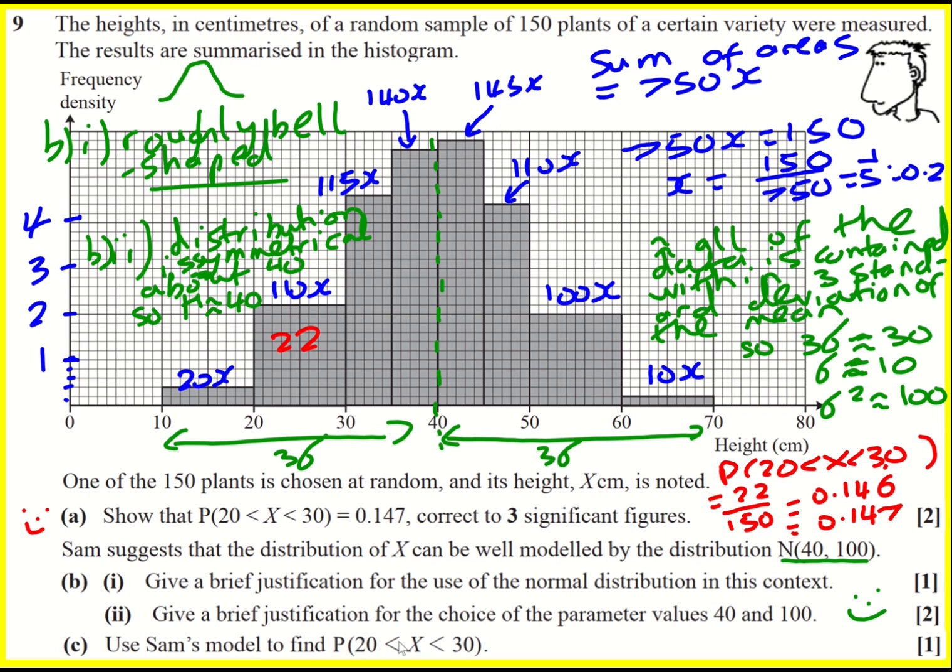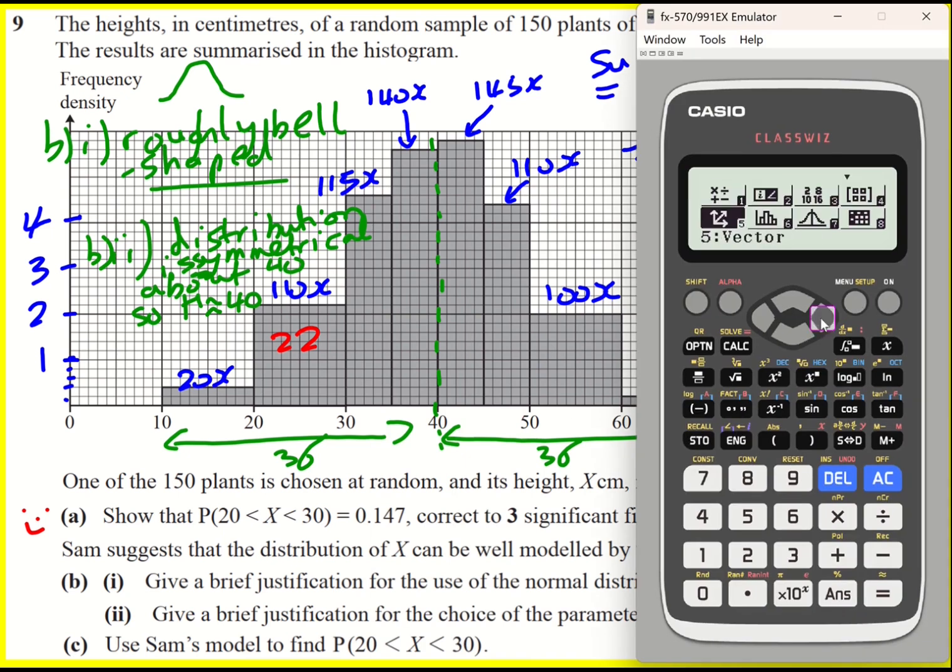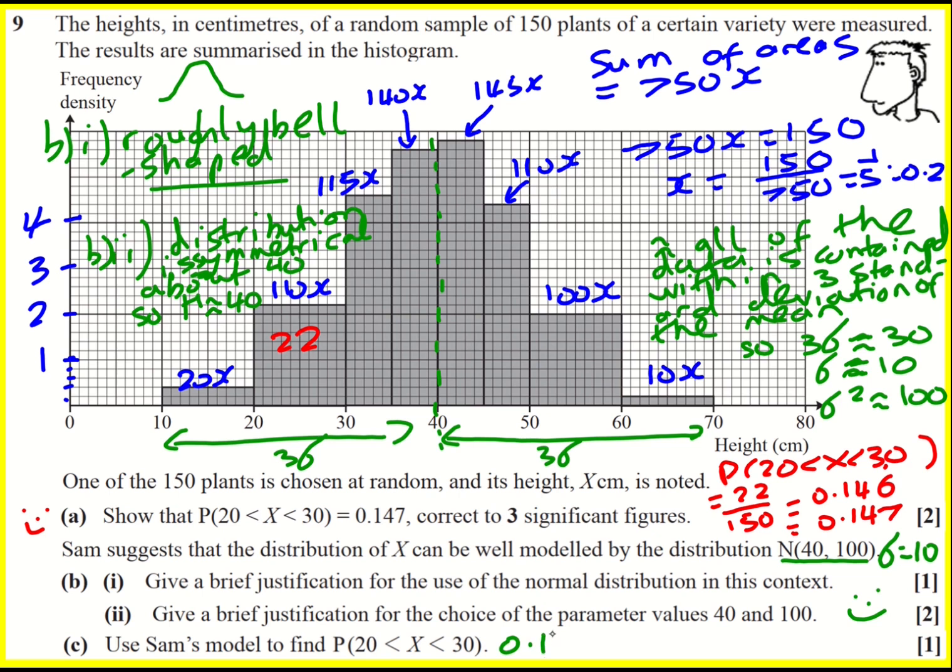We're now asked to use Sam's model to find this probability. Just going to write down because the one you put in your calculator is always the standard deviation. So that is going to be 10. And we can go to distribution, then to normal CD. Lower limit between 20 and 30. If I set 10 for this one, 40 for this one, and that gives 0.136. So it's not that close to 0.147, but we're making a lot of assumptions here. Remember, we're trying to fit this thing and it's not going to be exact. But hey, it's not bad.